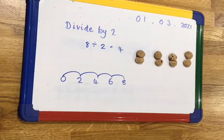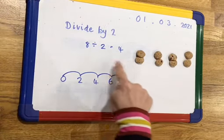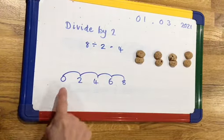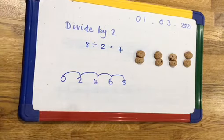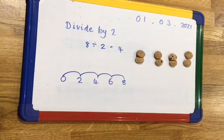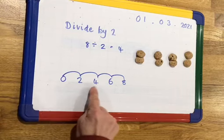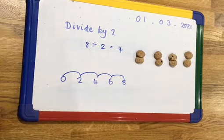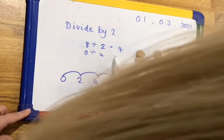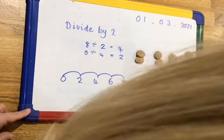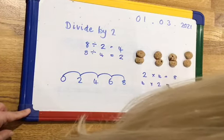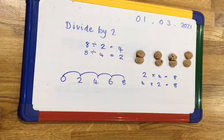So hopefully children, you came up with the same result as I did. If I'm dividing 8 into groups of 2, I will have 4 groups. I can show you this on my number line: 0, 2, 4, 6, 8 — so I've got 4 jumps. Now if I know that 8 divided by 2 is 4, I know that 8 divided by 4 is 2. I also know that 2 lots of 4 is 8 and 4 lots of 2 is 8 — so I can create a fact family.